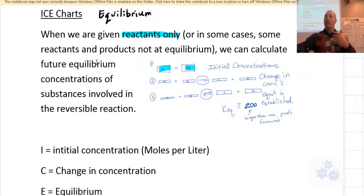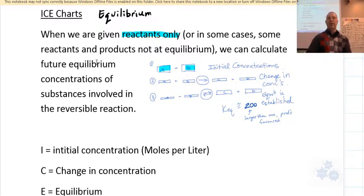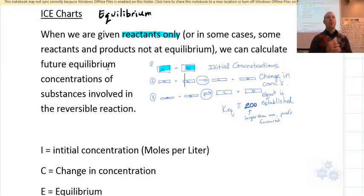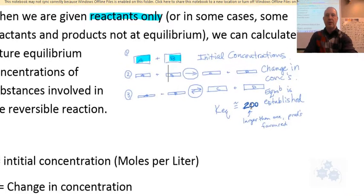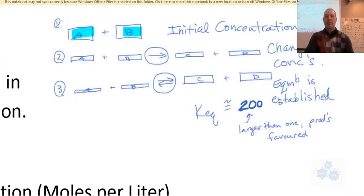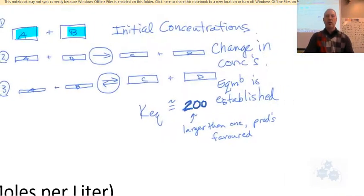You're going to be asked to find what those concentrations are going to end up being at equilibrium. The Keq will be given, and the Keq determines when that equilibrium is reached. Here's a little graphic to show you — we're going to be given A and B, which would be the reactants in most cases, with their initial concentrations.